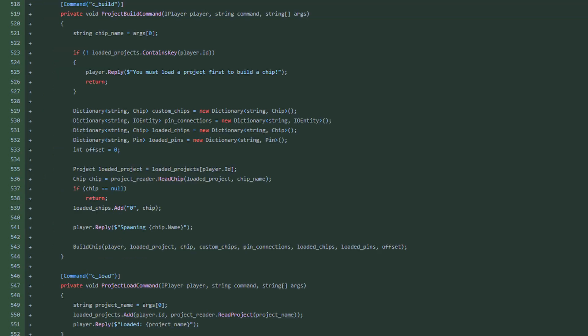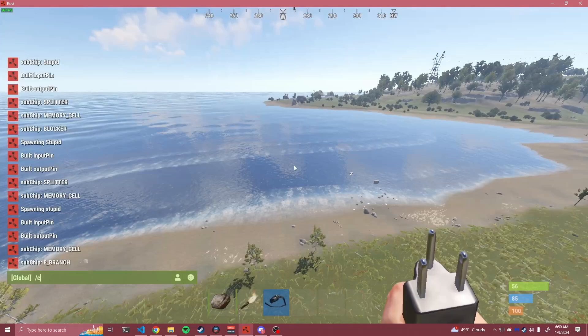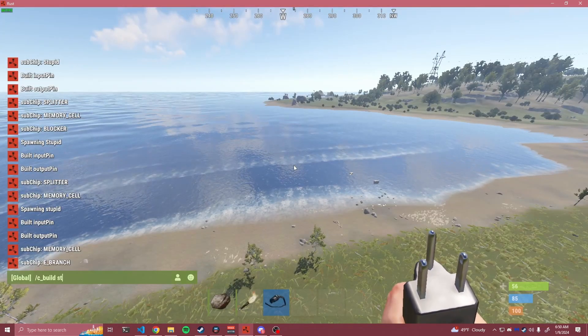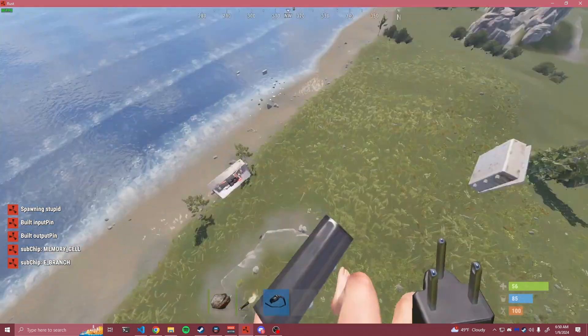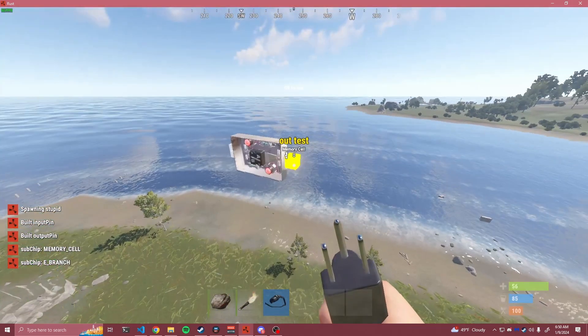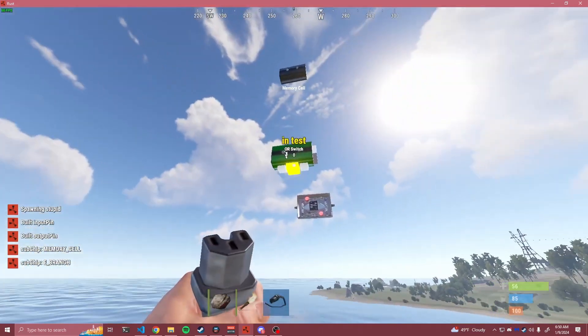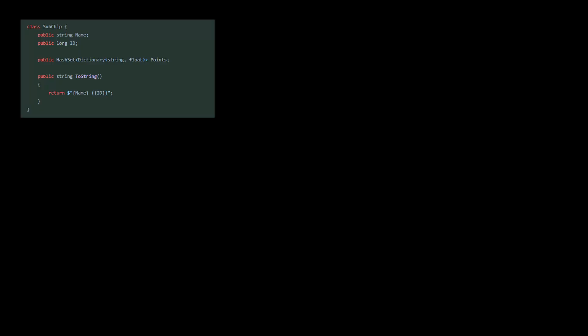Once that was done, I wrote some logic that would allow a user to load a project under their ID, and then run another command to build individual chips from that project. A user would then use the command slash C underscore build chip name, and the plugin would load that chip and attempt to build it. This would include building all the pins for the I/O to the chip, as well as build all of our internal subchips.